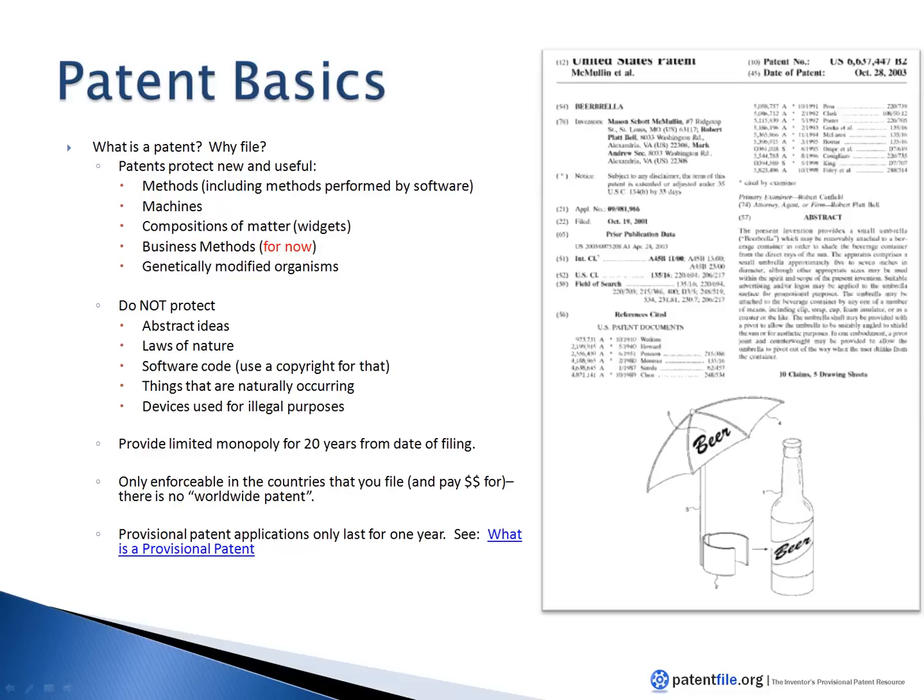You cannot use a patent to protect abstract ideas, laws of nature, or software code — you would use a copyright for that. Anything that's naturally occurring or used for illegal purposes also cannot be patented.